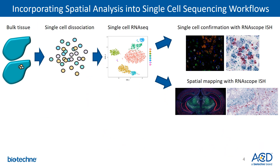One technique that is able to do this is RNAscope in situ hybridization. Many researchers have been incorporating spatial analyses into their single-cell RNA sequencing workflows, because when you perform these assays, you're taking bulk tissue, dissociating it into individual single cells, and characterizing these cell types by clustering and identifying potentially new cell types characterized by various gene signatures. However, those gene signatures still need to be confirmed at the single-cell level and also have a spatial organization within the tissue. With the RNAscope assay, you can get both single-cell confirmation and spatial mapping.